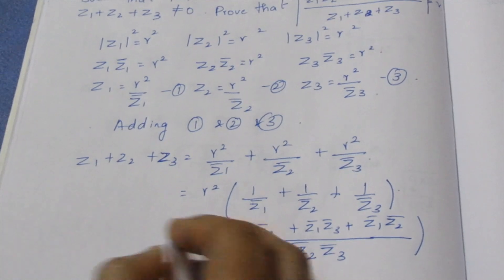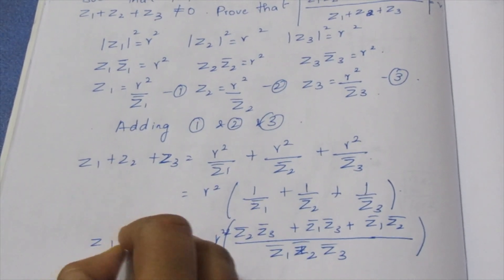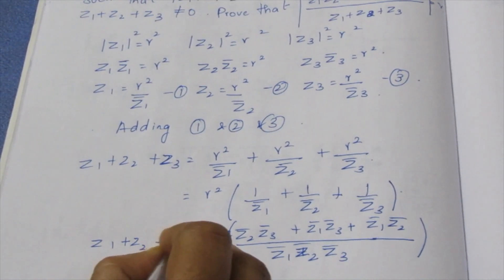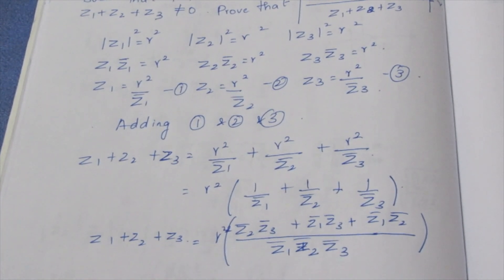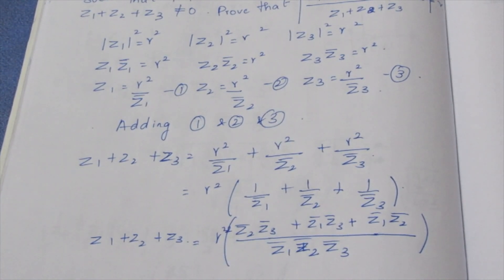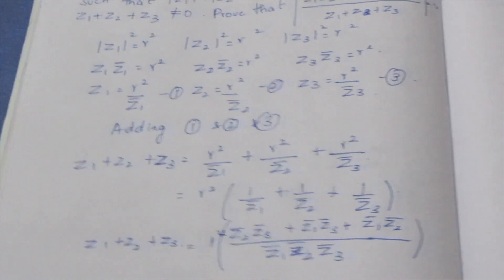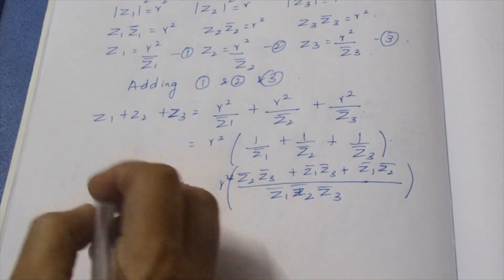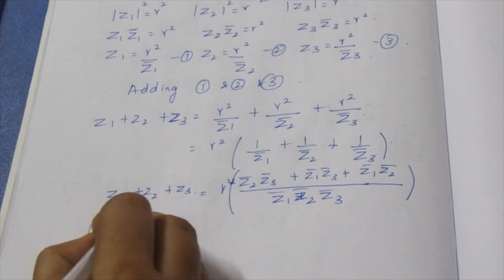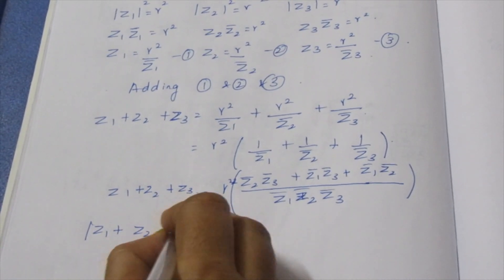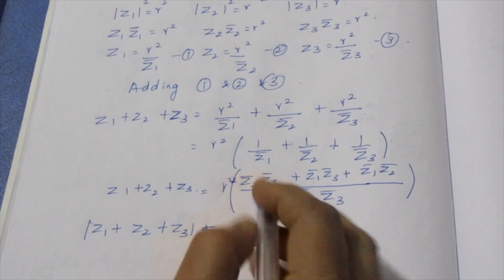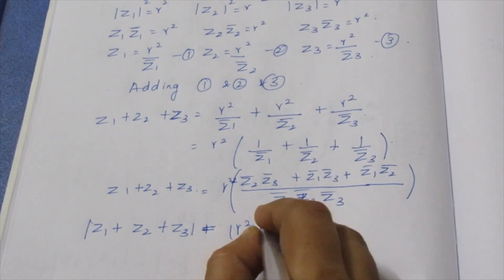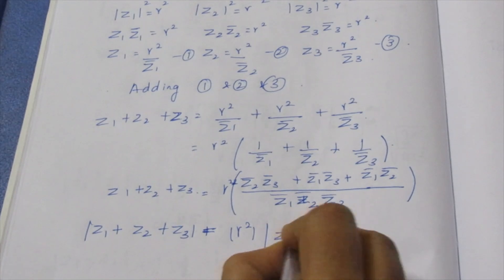This result is equal to Z1 plus Z2 plus Z3. So now we take modulus on both sides. We need modulus of Z1 plus Z2 plus Z3, which equals R squared times modulus of (Z2·Z3 + Z1·Z3 + Z1·Z2).